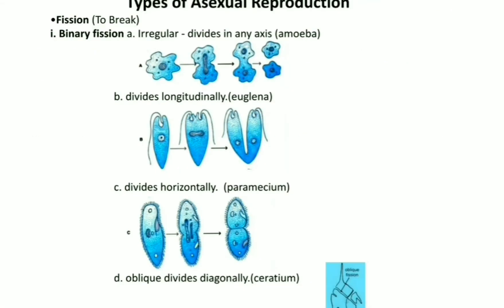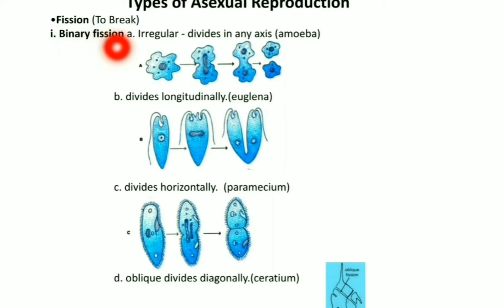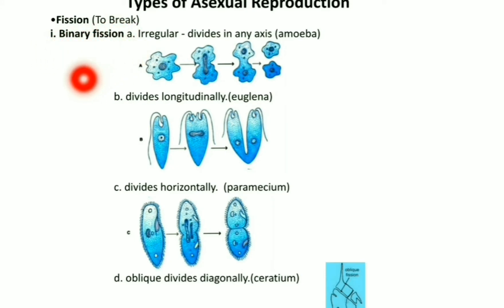Types of asexual reproduction — Fission. Fission means to break. Sometimes the body of a single organism divides into two or more organisms and the process is known as fission. Fission is further classified into binary fission, multiple fission, and plasmotomy.